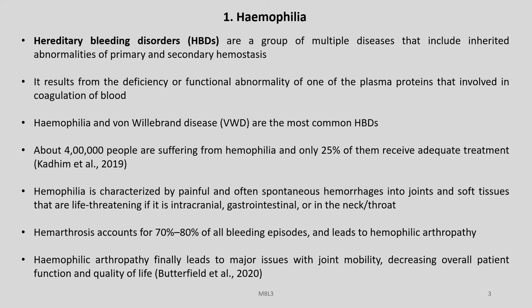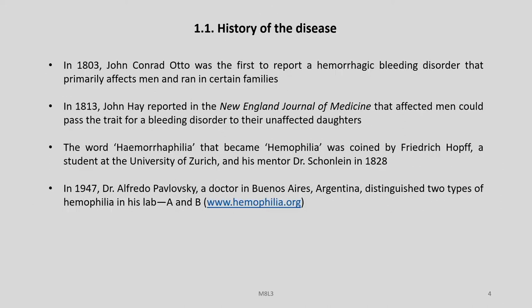Haemophilia and von Willebrand disease (VWD) are the most common hereditary bleeding disorders. About 400,000 people are suffering from Haemophilia and only 25% of them receive adequate treatment. The disease is characterized by painful and often spontaneous haemorrhages into joints and soft tissues that are life-threatening if intracranial, gastrointestinal, or in the neck or throat. Haemarthrosis accounts for 70 to 80% of all bleeding episodes and leads to haemophilic arthropathy, causing major issues with joint mobility, decreasing overall patient function and quality of life.